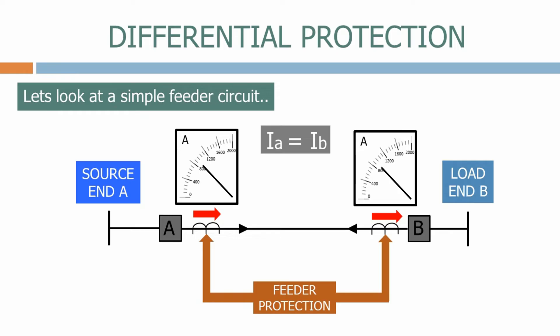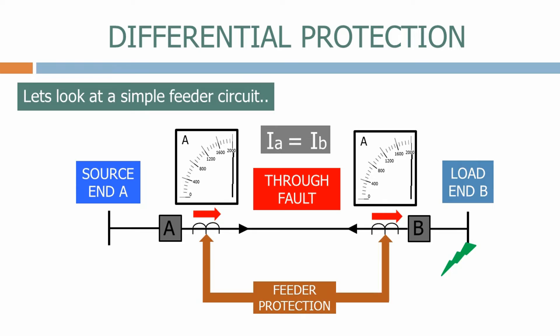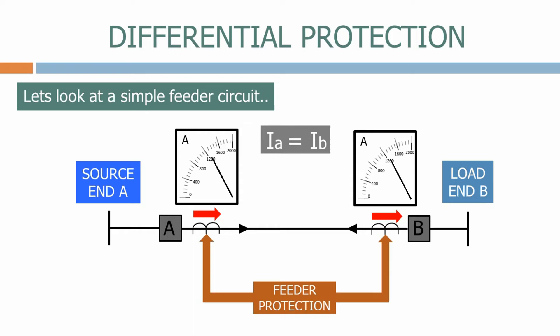Let's now apply an electrical fault at End B and see what happens. The current magnitude will now increase substantially at both ends A and B, but they will still have the same magnitude and therefore the feeder protection system will not operate. This is called a through fault, as the fault current passes through the protection system. Let's now remove the fault — the current on both ends returns to normal.